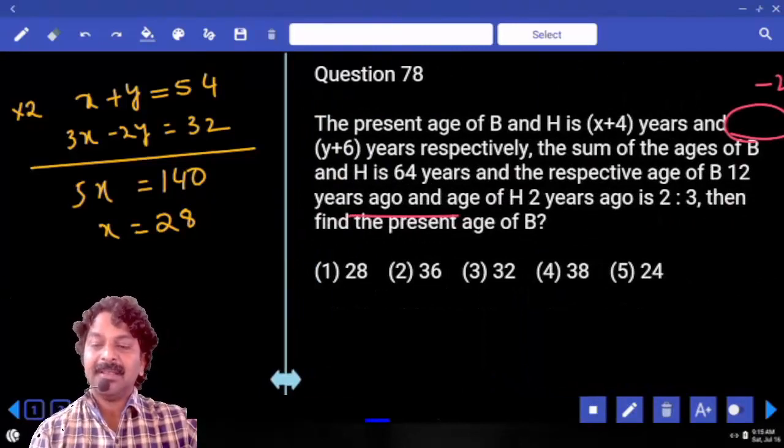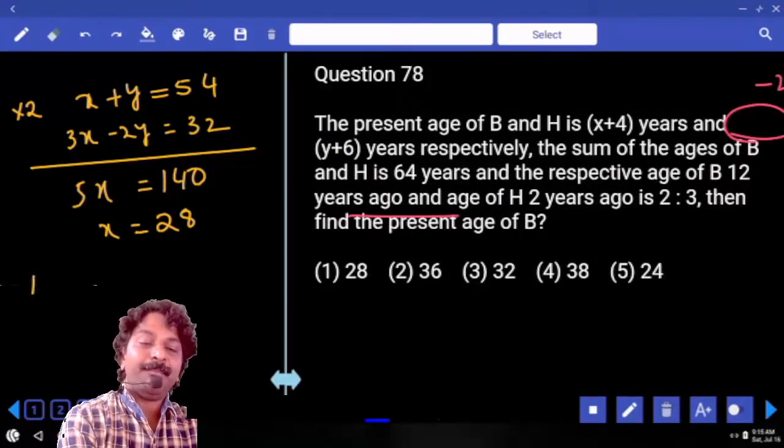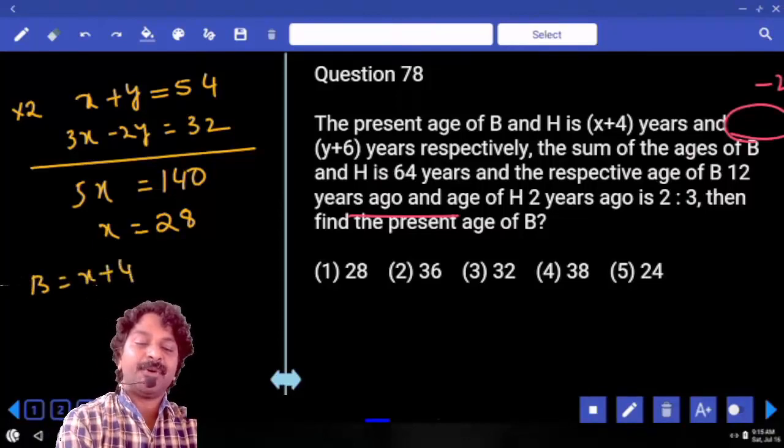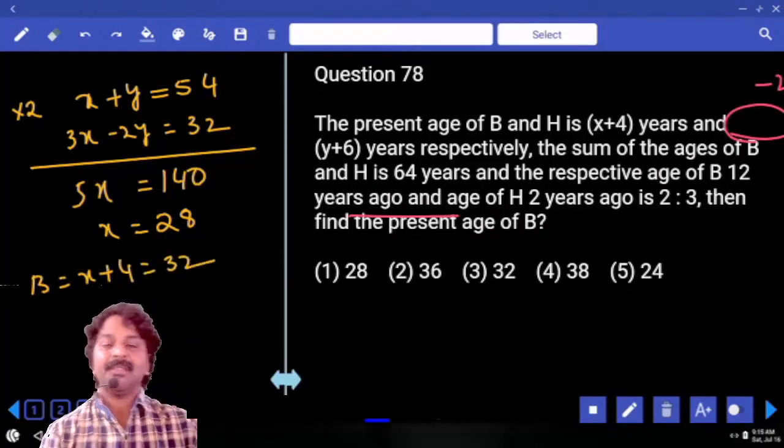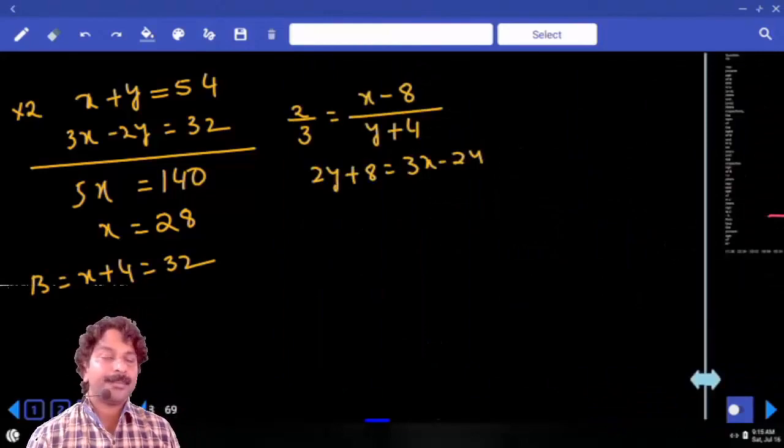What exactly is the question? The question is present age of B. B's present age is x plus 4. That means the answer is 32. Thank you.